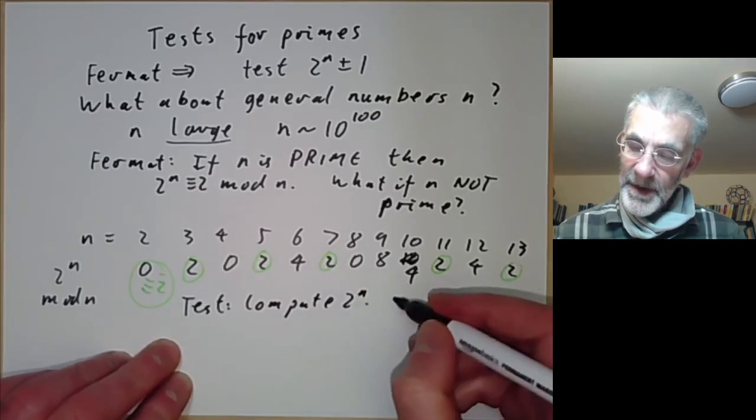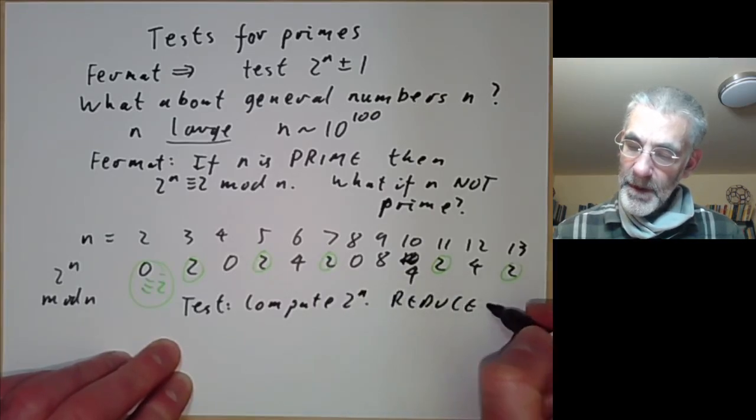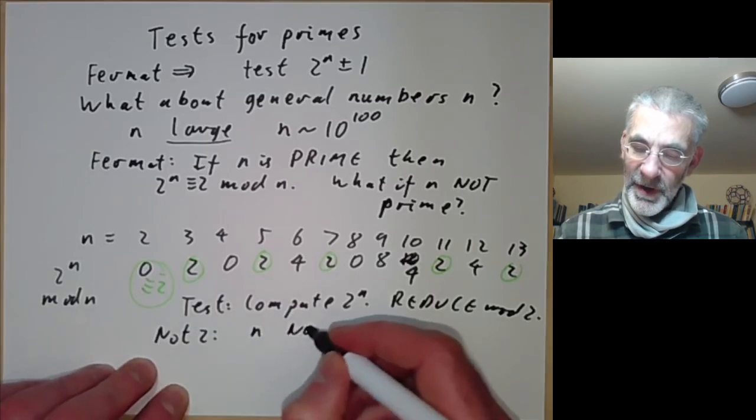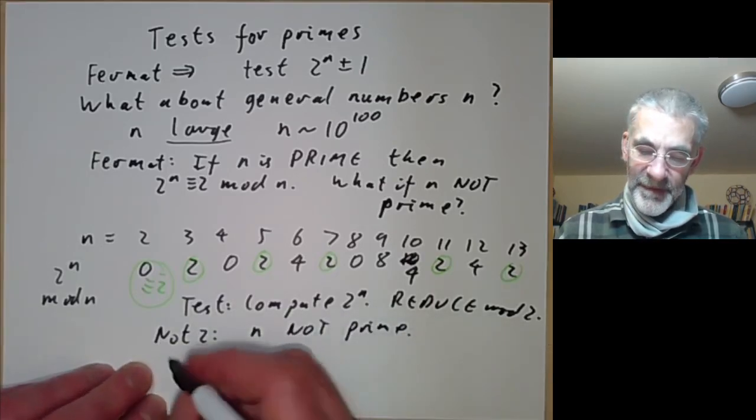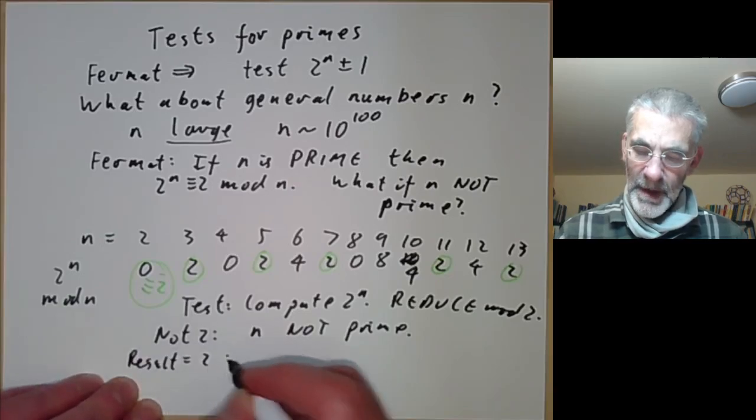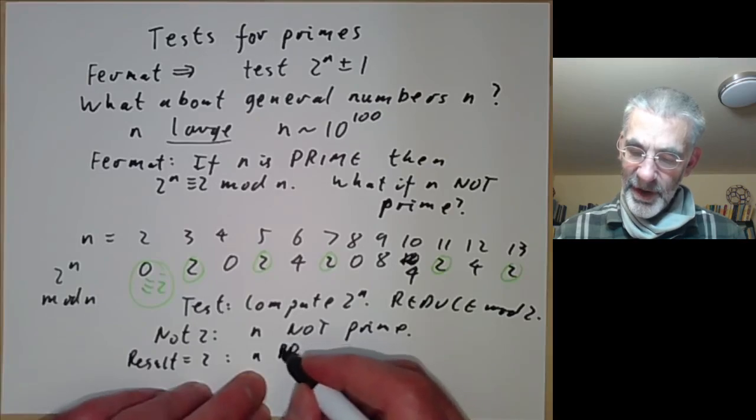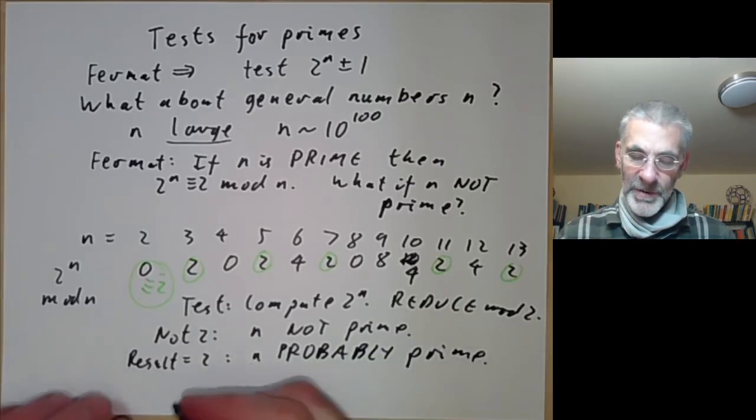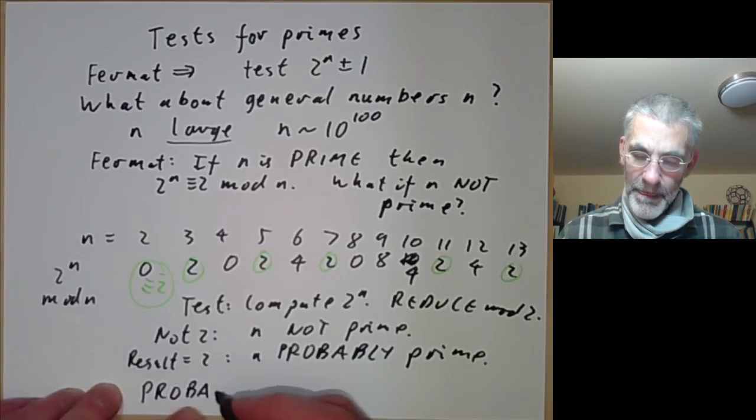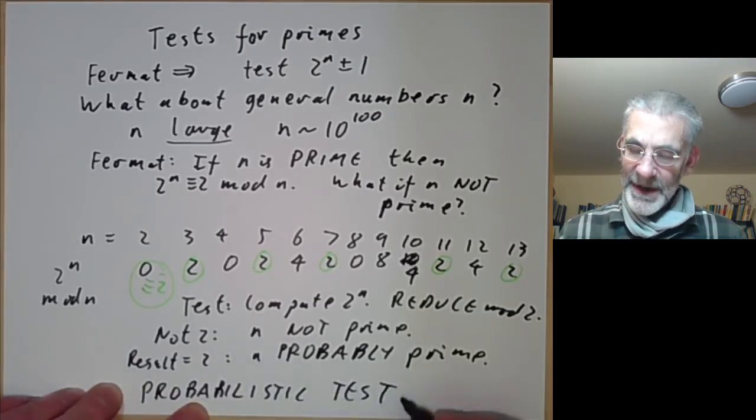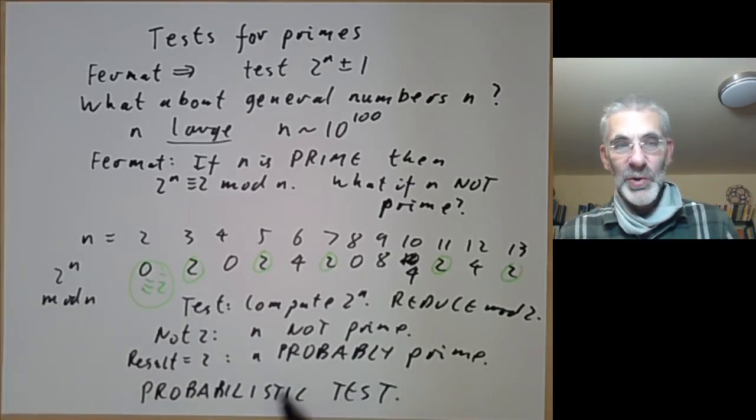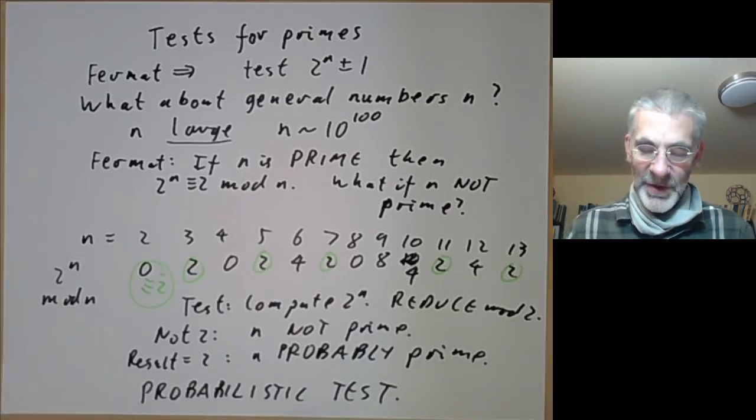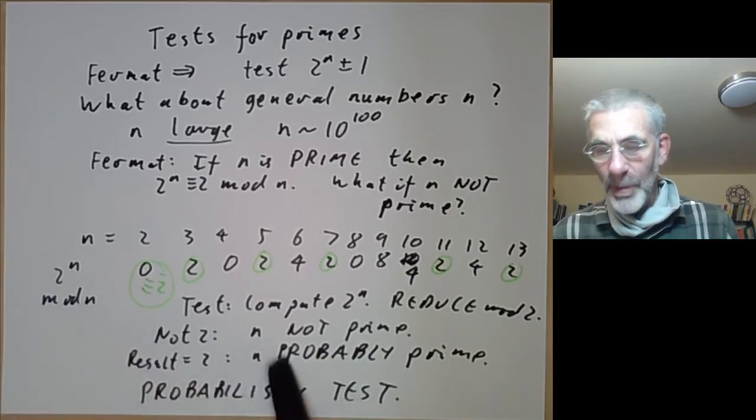So this gives us the following test. Compute 2 to the n and reduce mod n. If the result is not 2, n is not prime. If the result is 2, then n is probably prime. So this is an example of something called a probabilistic test. It doesn't always give you a definitive answer, but it gives you some evidence. If you were doing Bayesian reasoning, your confidence that n was prime would go up if it passed this test.